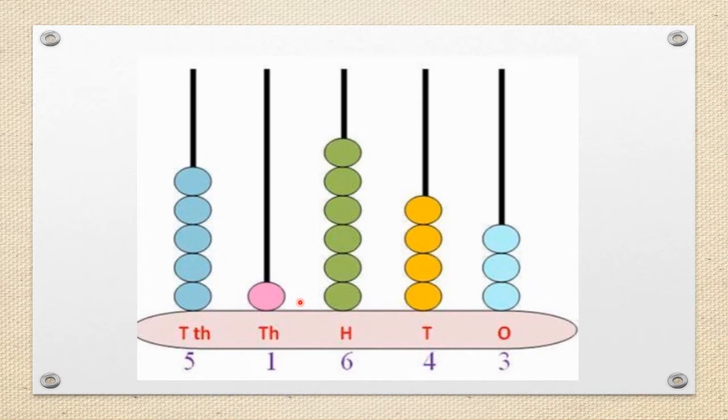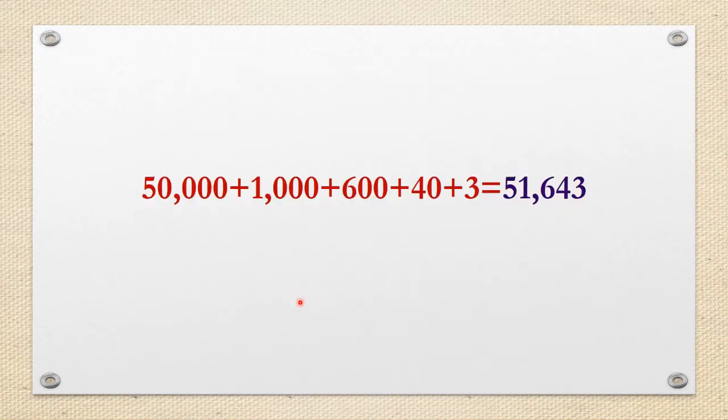Six beads in hundreds place so it is six hundred. Then one bead in thousands place so it is one thousand. Finally, five beads in tens thousands place which means fifty thousand. Now, 50,000 plus 1,000 plus 600 plus 40 plus 3. When added together, we get the number 51,643.